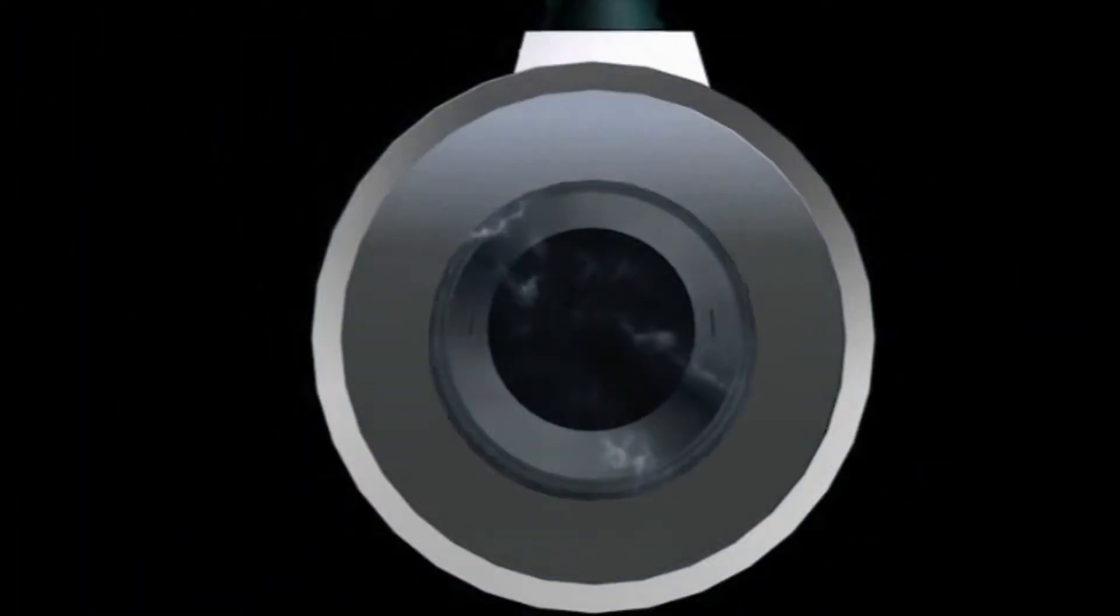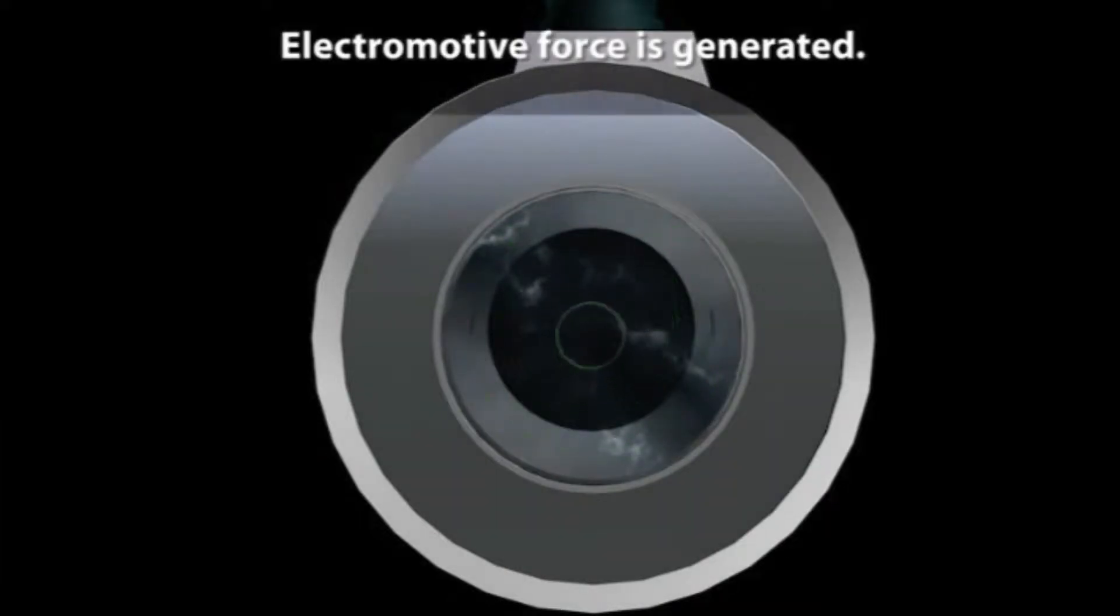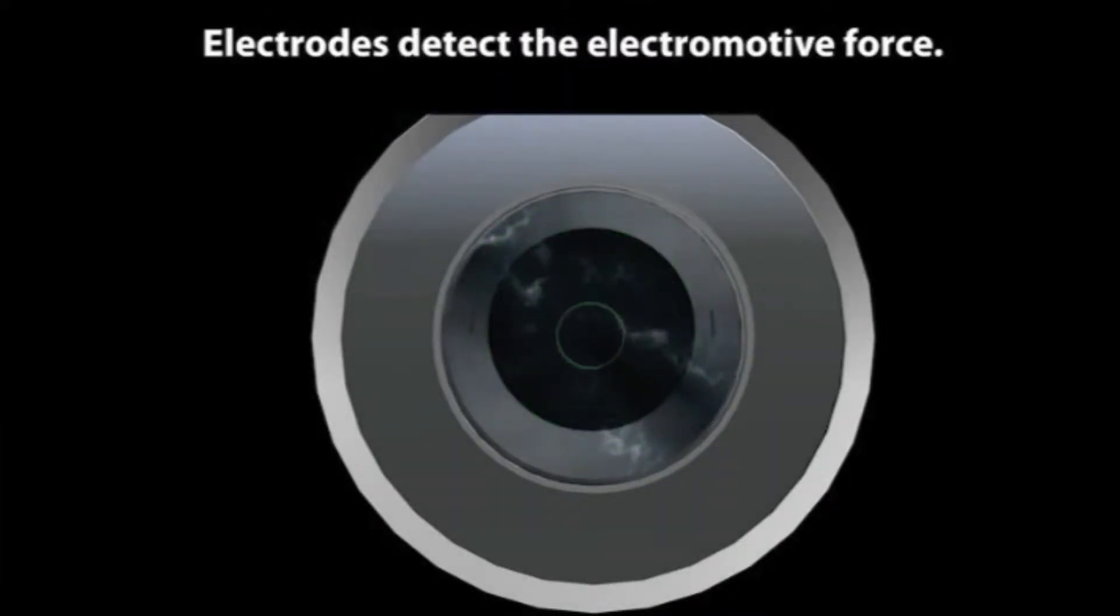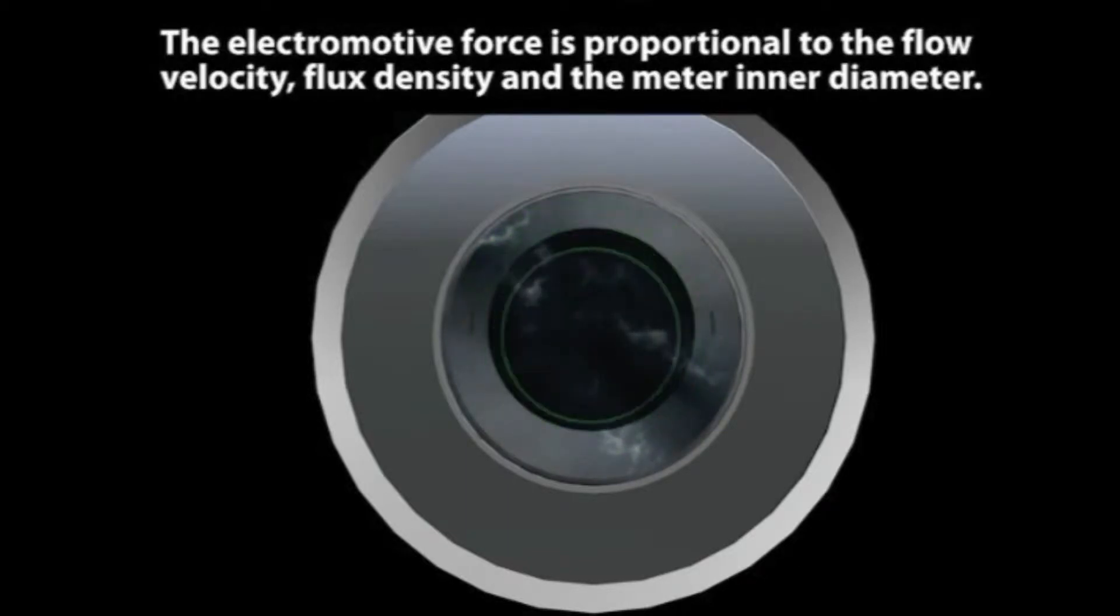As a conductive liquid flows through the flow tube, an electromotive force is generated. The electrodes detect the electromotive force. The electromotive force is proportional to the flow velocity, flux density, and the meter inner diameter.